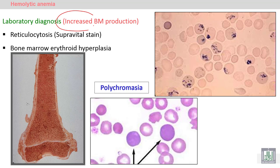Reticulocytosis means an increase in the reticulocyte count in the peripheral blood. You can see multiple reticulocytes here in the peripheral blood. Reticulocytosis can be identified by supra vital stains or in the peripheral blood film.